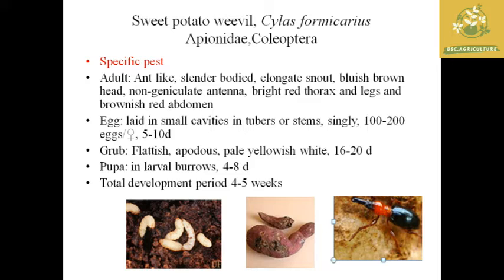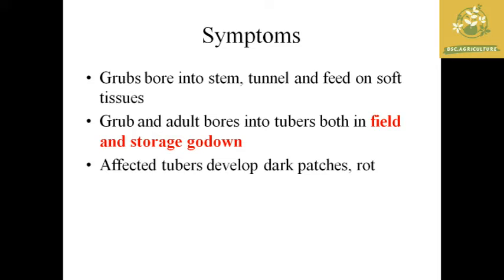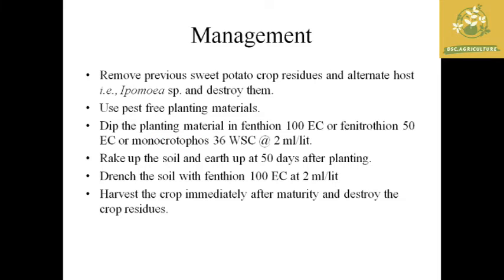The total development period for the sweet potato weevil is 4 to 5 weeks. The major symptoms are that the grub bores the stem and tunnels, feeding on the sweet potato's fibrous tissue. Both grub and adult bore into tubers in both field and storage conditions, which is why it is said to be a major specific pest. The affected tubers develop dark patches and rot, which acts as a gateway for secondary infections.